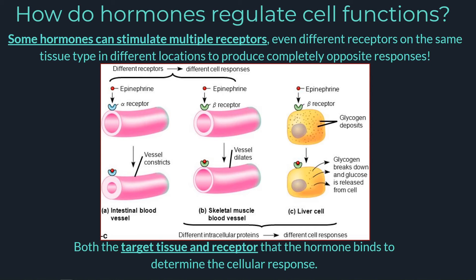For example, epinephrine can bind to cells with alpha receptors or beta receptors in our blood vessel tissue. Binding to alpha receptors results in blood vessels constricting, while binding to beta receptors will cause them to dilate. It's all about location, location, location — where hormones get taken after being released can impact what type of response we see in the tissues.